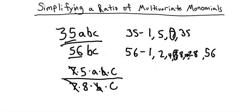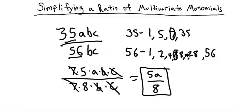b divided by b gets cancelled out. c divided by c equals 1, so that gets cancelled out. Now our problem is left with 5a over 8, and that right there is your answer.